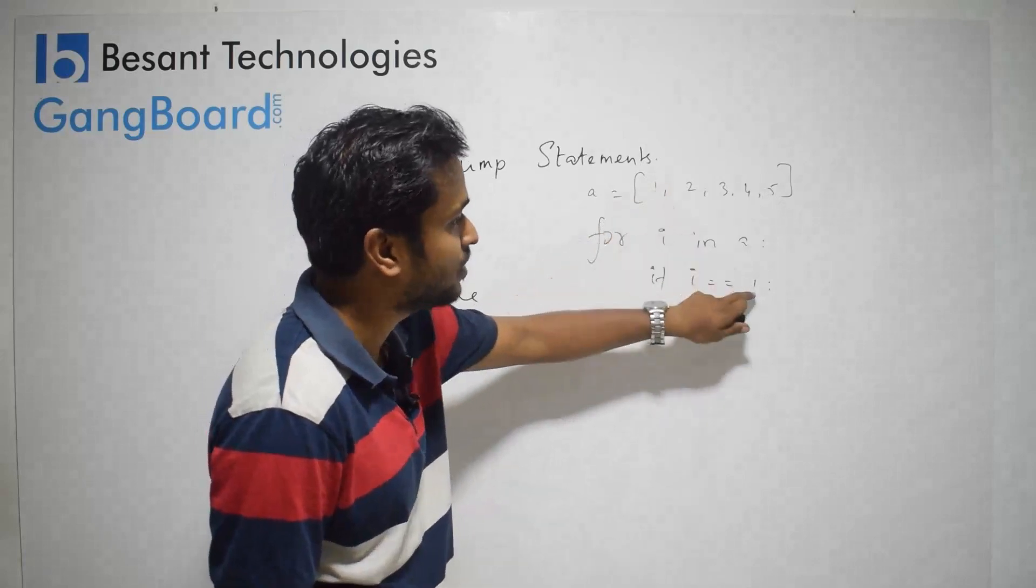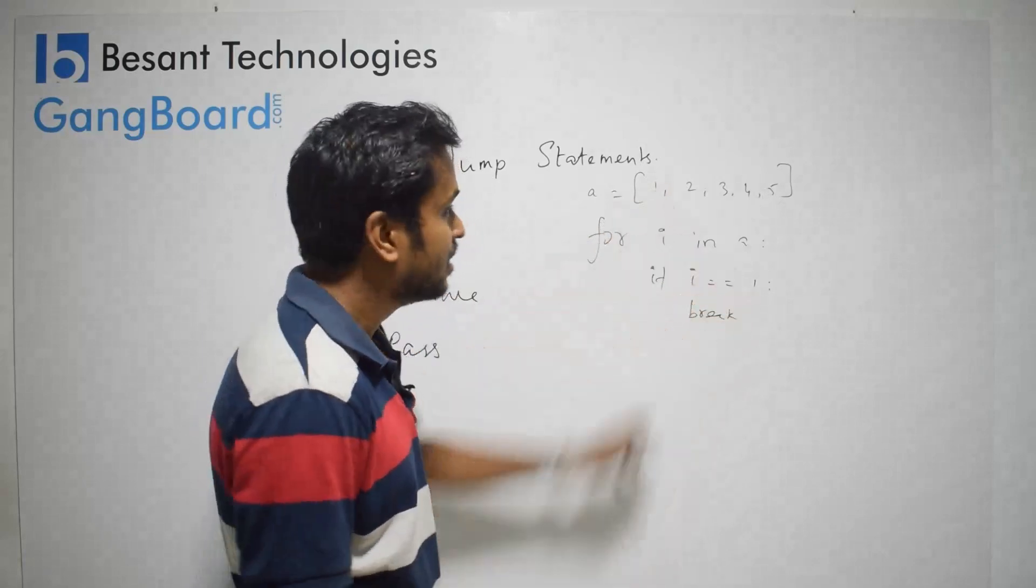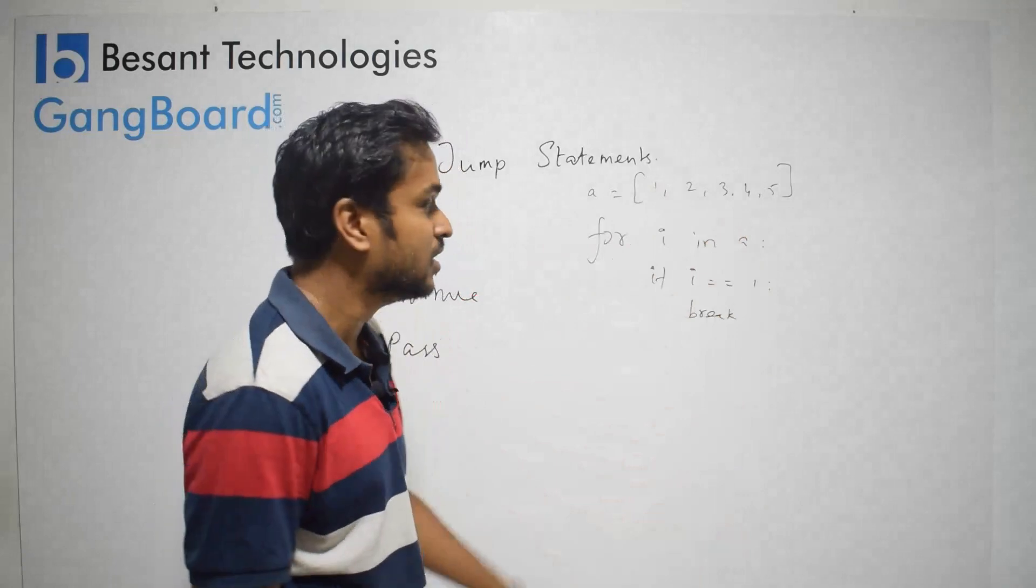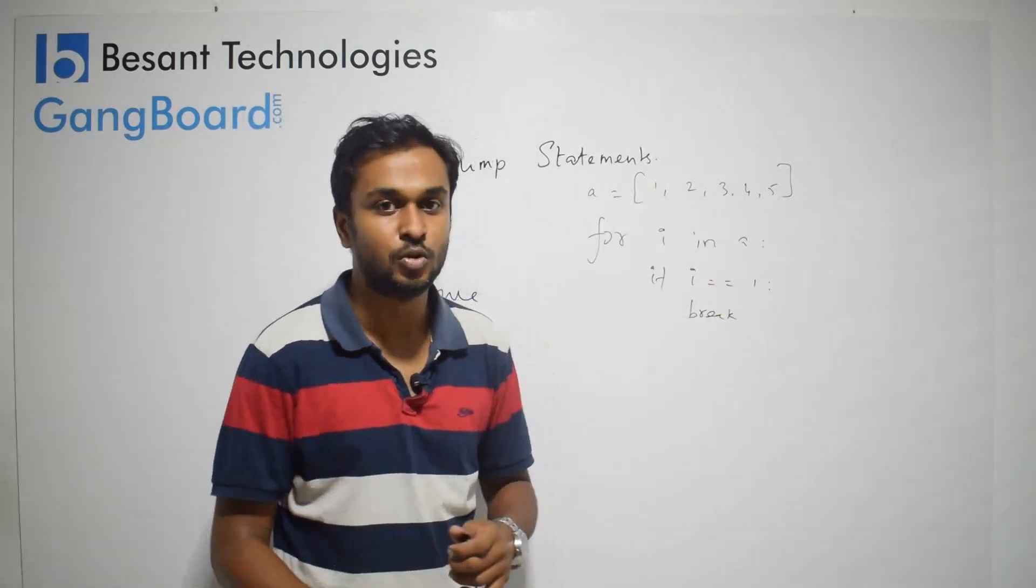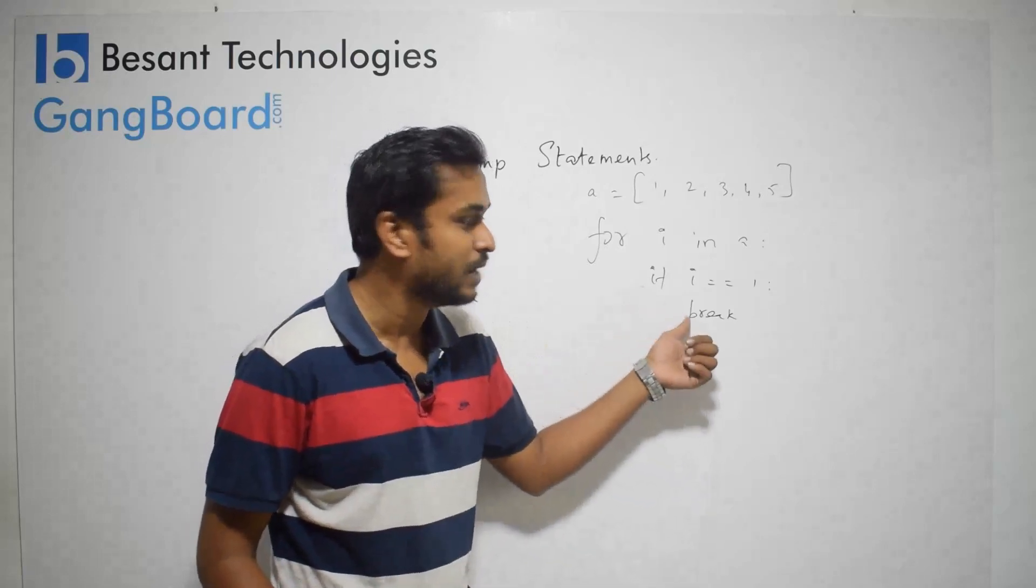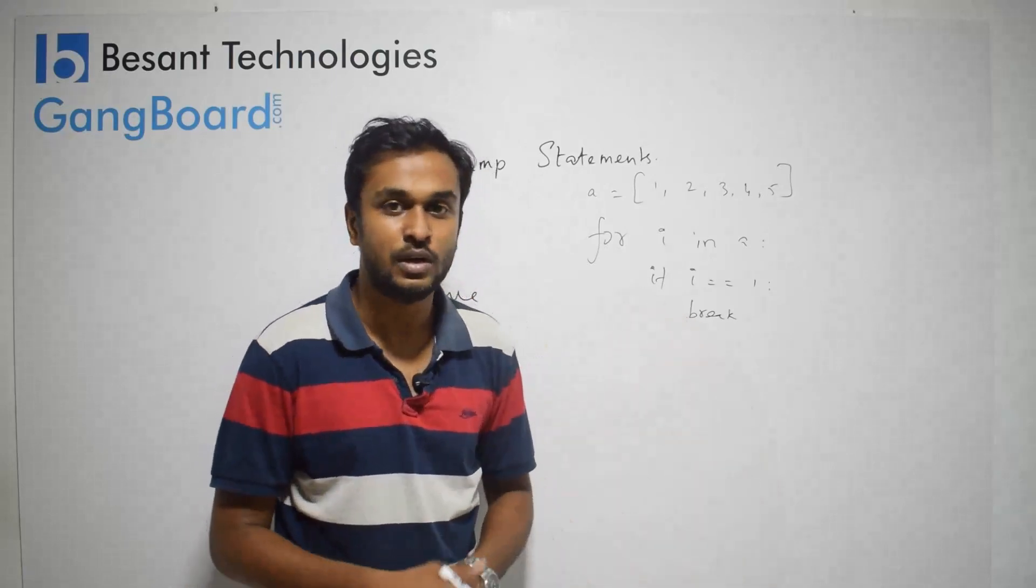So first time 1 comes, it is going to break. Remaining 2, 3, 4, 5 will not execute. So in this case, when I want to terminate the loop, you can use break statements. Break can be used both in for loop and while loop.